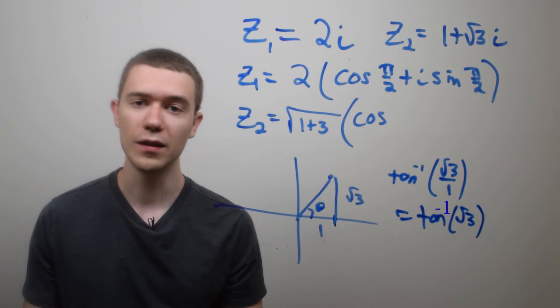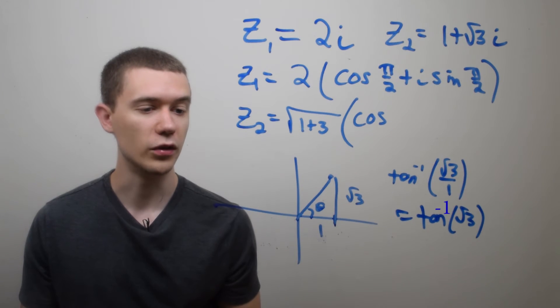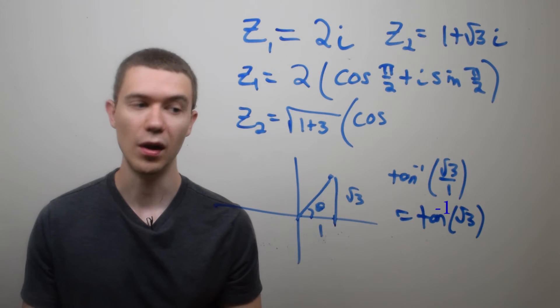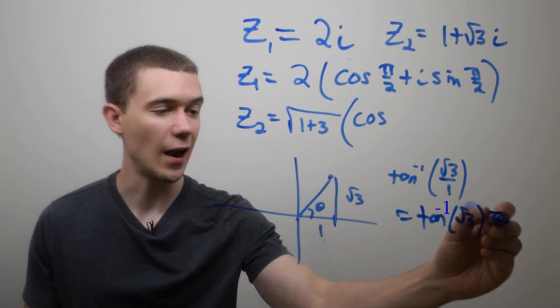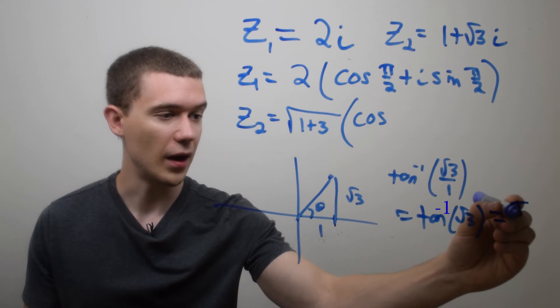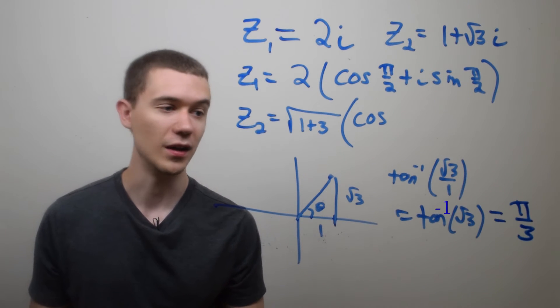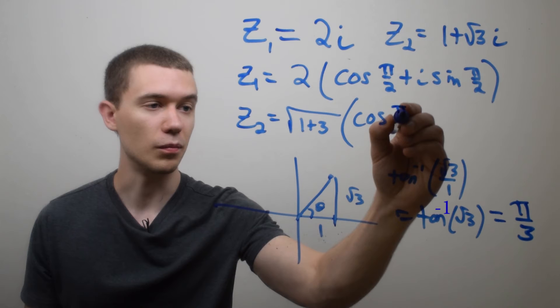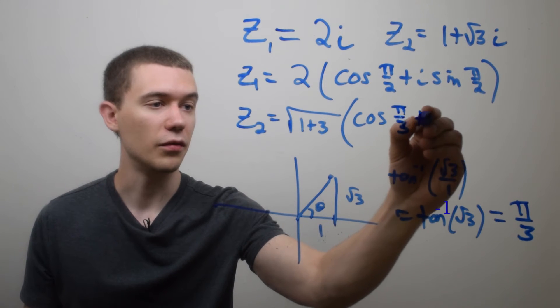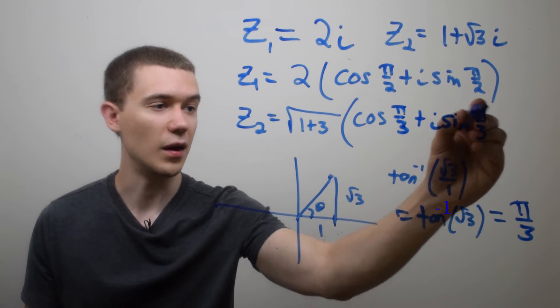You can also think about it as, where does sine equal √3/2 and cosine equal 1/2? This is going to happen in principal argument at π/3. So just going back to basic trigonometry. So the argument here, in fact the principal argument is π/3, and I'll add on plus i sine of π/3.